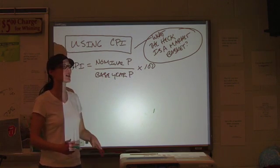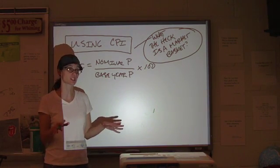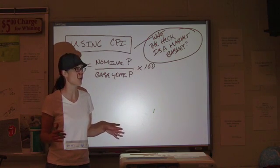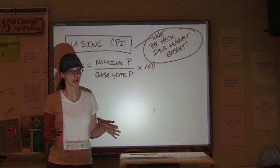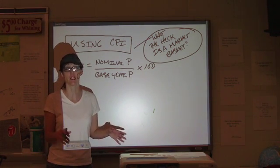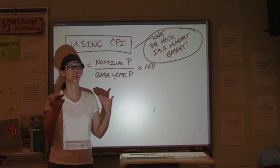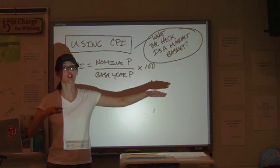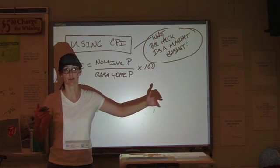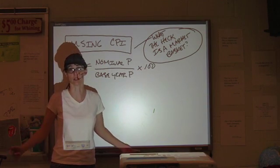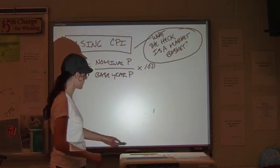For the base year, we want something when the economy was pretty stable. For example, we're not going to use 2001 because 2001, not a great year for the economy. This year, not a great year for the economy. You want something when you can actually gauge what prices reasonably should do in the absence of inflation. You don't want the economy going all over the place with lots of wacky stuff happening because that's not going to work.